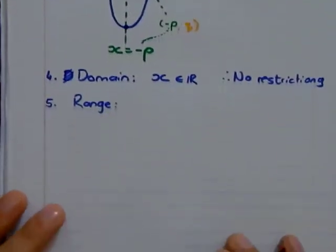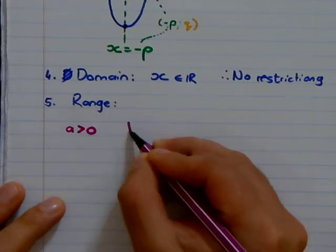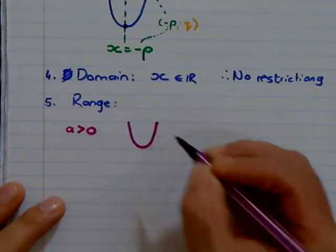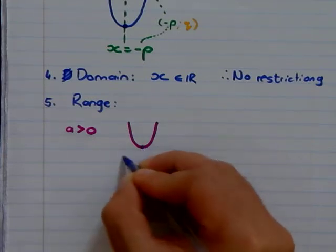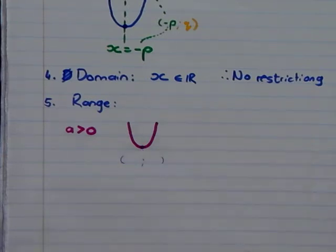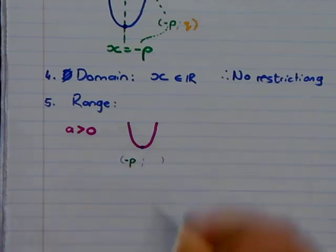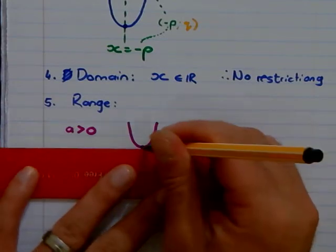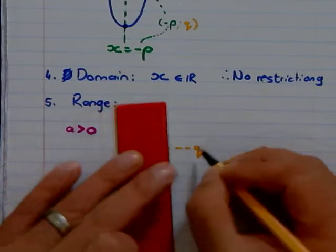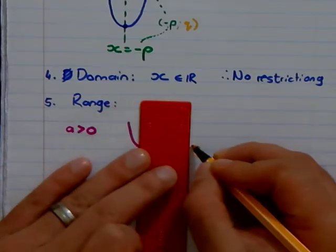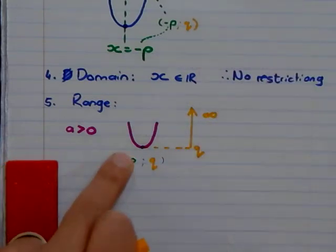So therefore, my form is also important. We know this is going to be a happy face. This point here is my turning point, and that's negative p, q. And we said my range has to do with my y value. So it's from this point, that's my q point, up to, going, going, going, infinity, when it's a happy face.